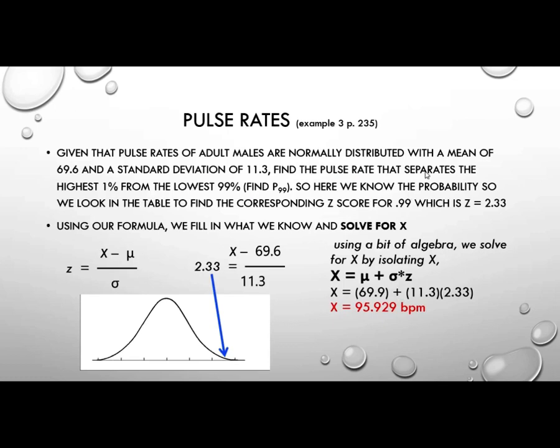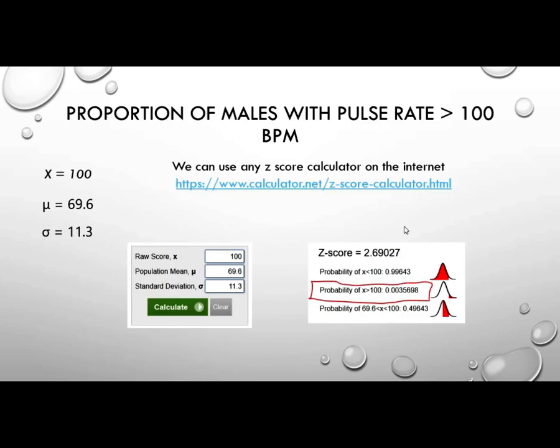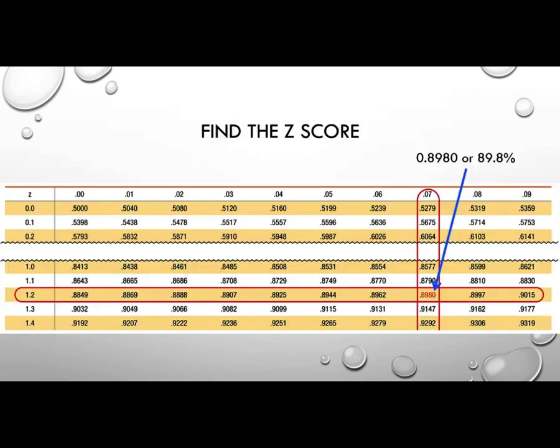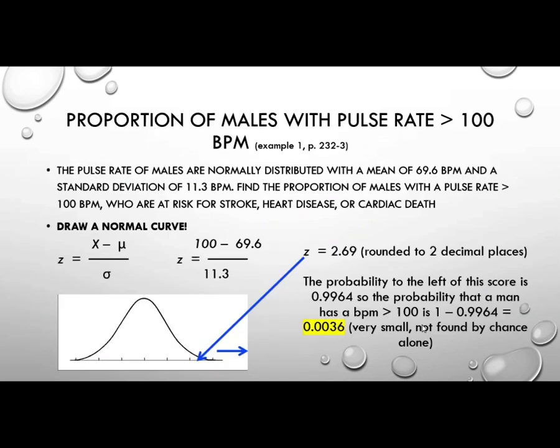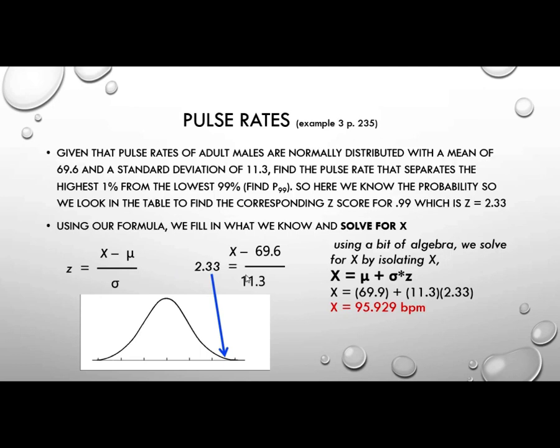Let's do another one. Pulse rates. Example 3 on page 235. Given that pulse rates of adult males are normally distributed with a mean of 69.6 and a standard deviation of 11.3, find the pulse rate that separates the highest 1% from the lowest 99%. So we're looking for probability of 0.99. So here we know the probability, so we look in the table to find the corresponding z-score for 0.99, so that instead of looking for the z-scores, we're going to look in the table for the one that says 0.99 and then find the corresponding z-score, which we found is 2.33.